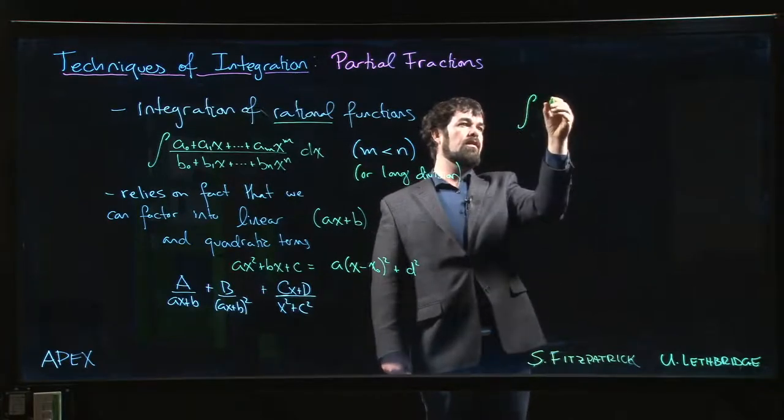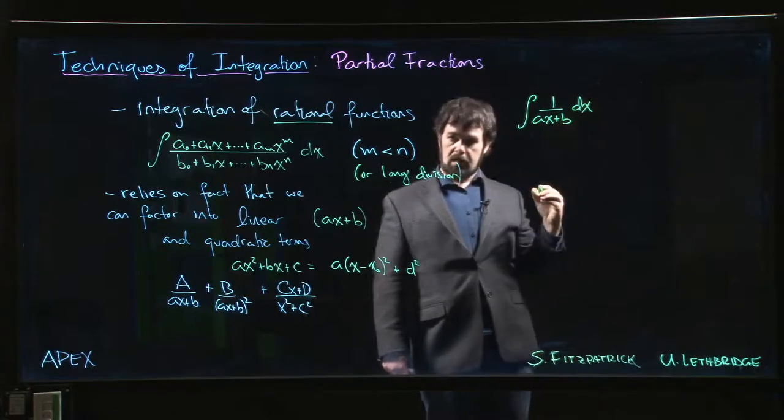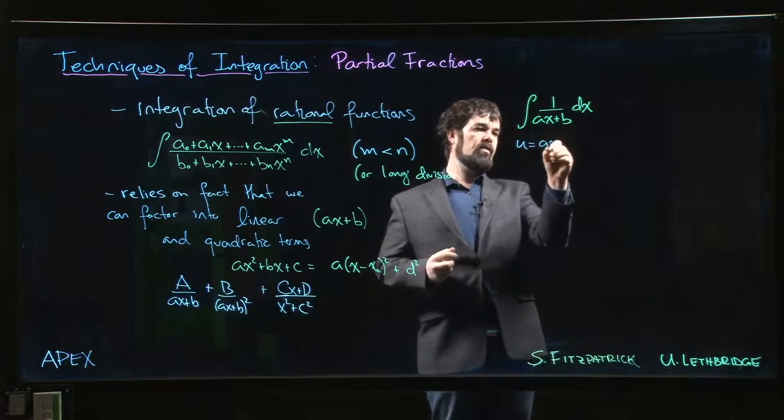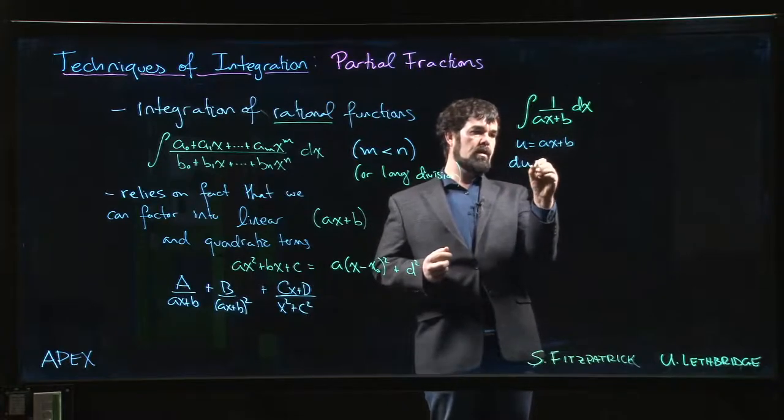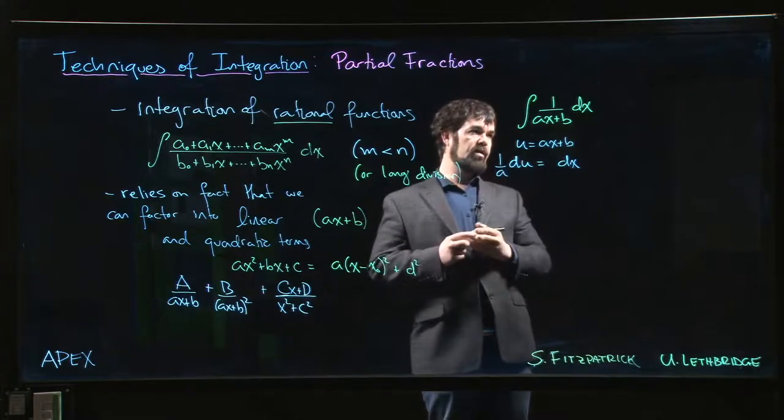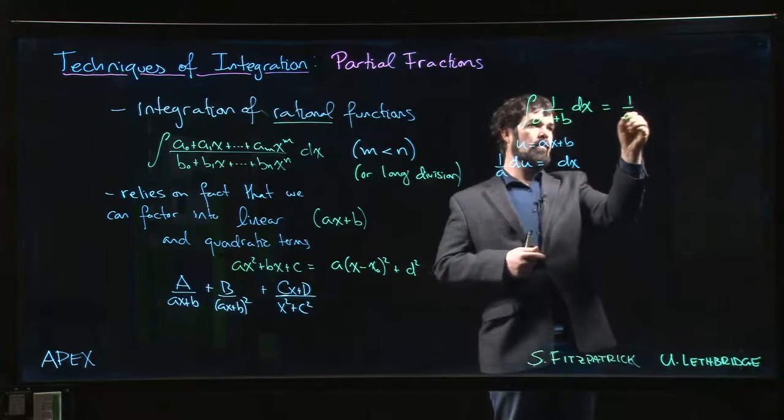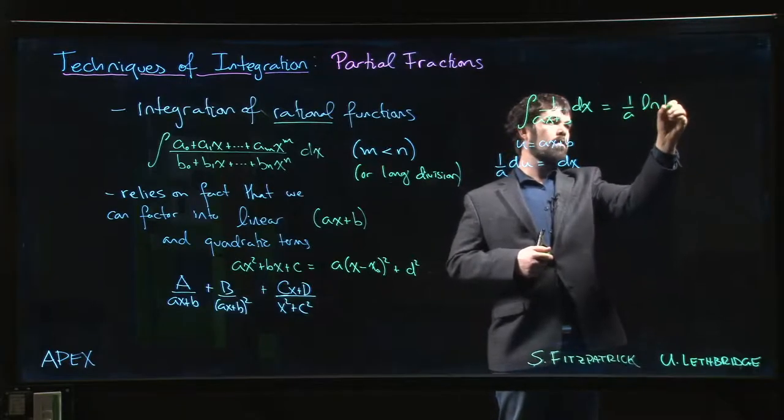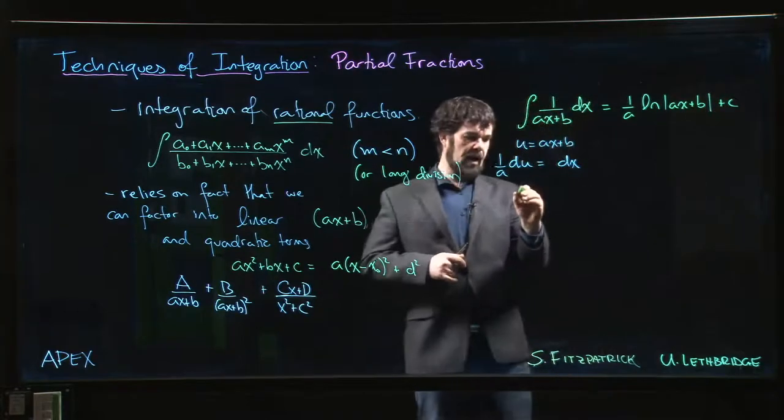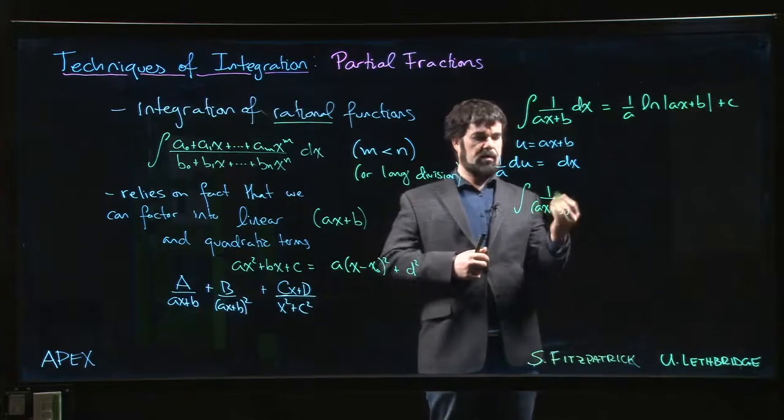If you're doing the antiderivative of 1/(ax + b), we can do a simple u substitution. If u is equal to ax + b, then du is a times dx, so 1/a du is dx. We sub all that in and we know what we're going to get: we're going to get 1/a times the natural log of the absolute value of ax + b.